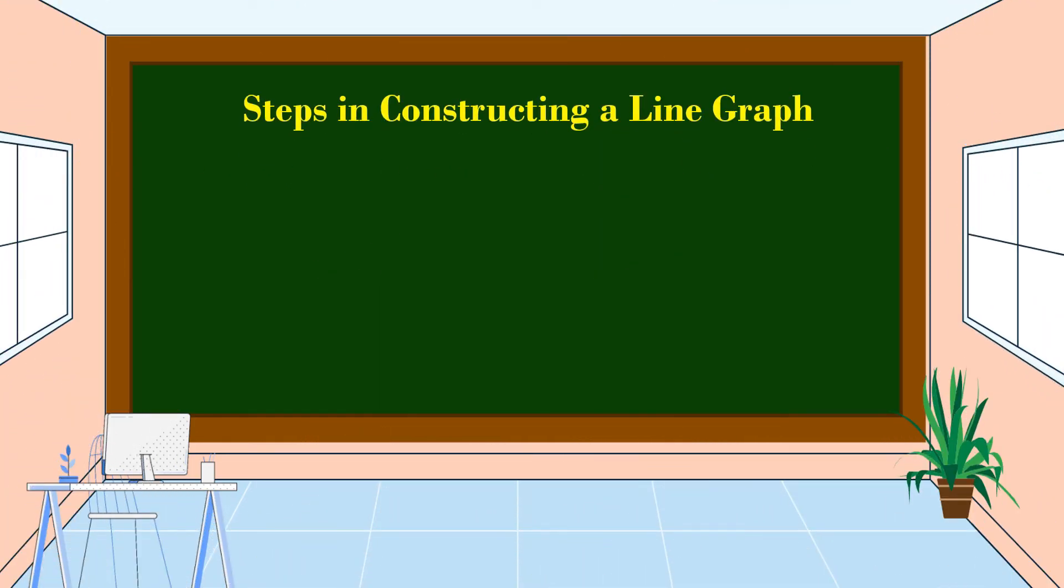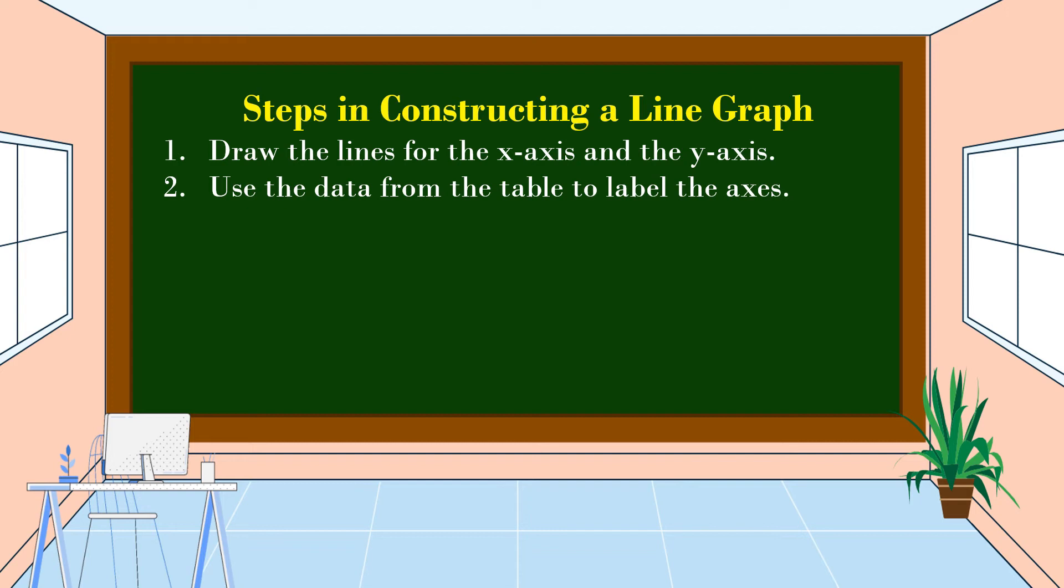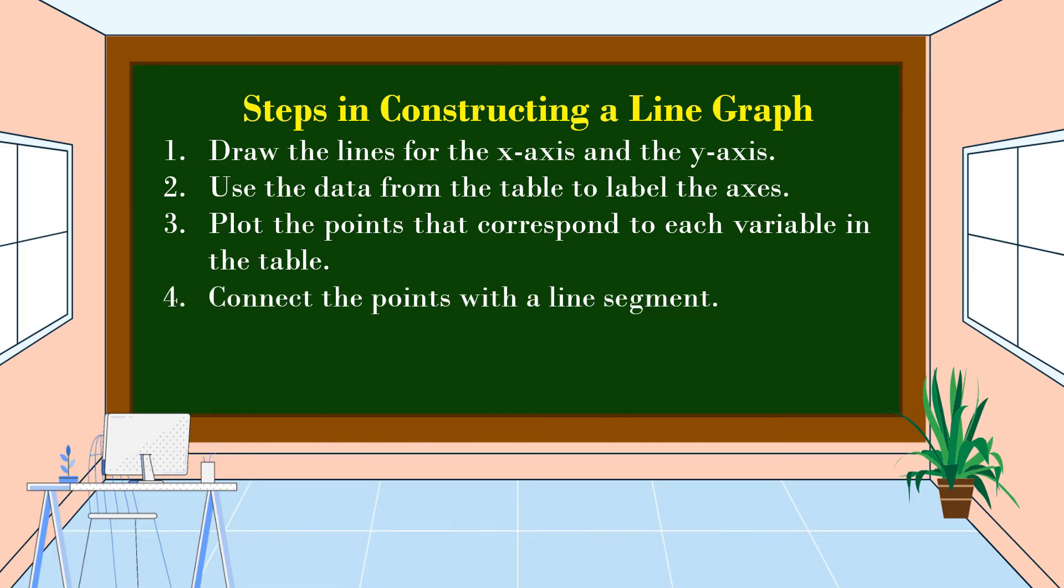Here are the steps in constructing a line graph. Number 1: Draw the lines for the x-axis and the y-axis. Number 2: Use the data from the table to label the axis. Number 3: Plot the points that correspond to each variable in the table. Number 4: Connect the points with a line segment. Number 5: Put a title on the graph.